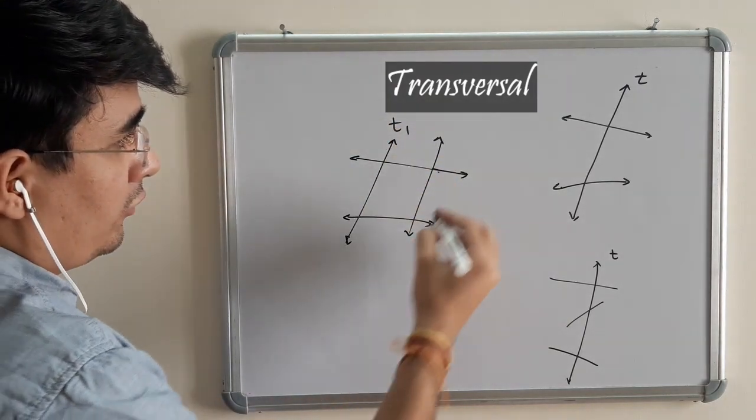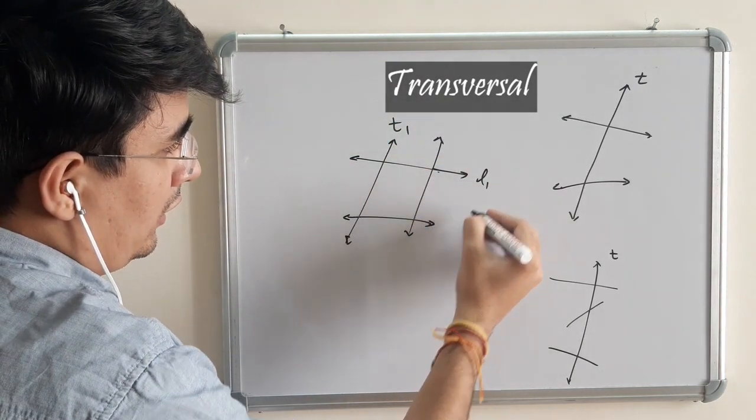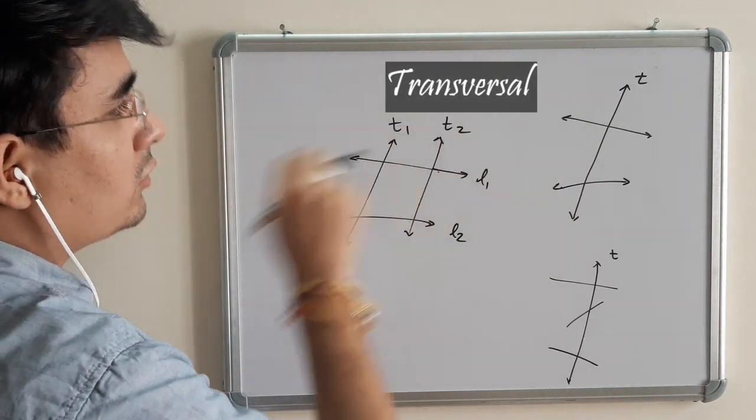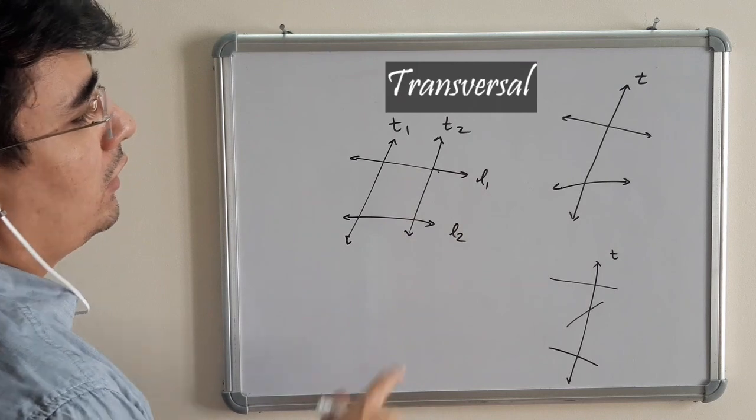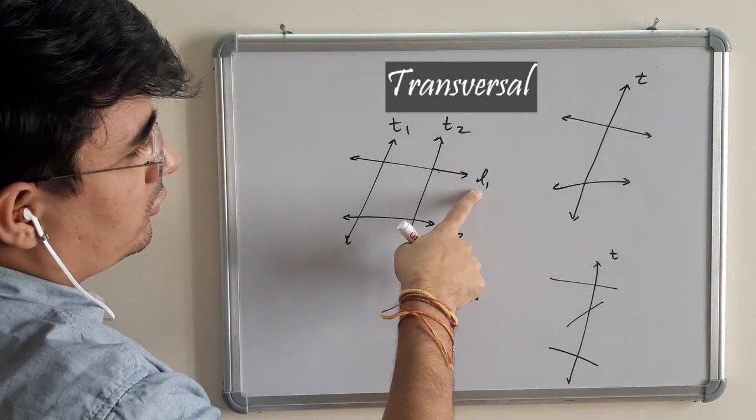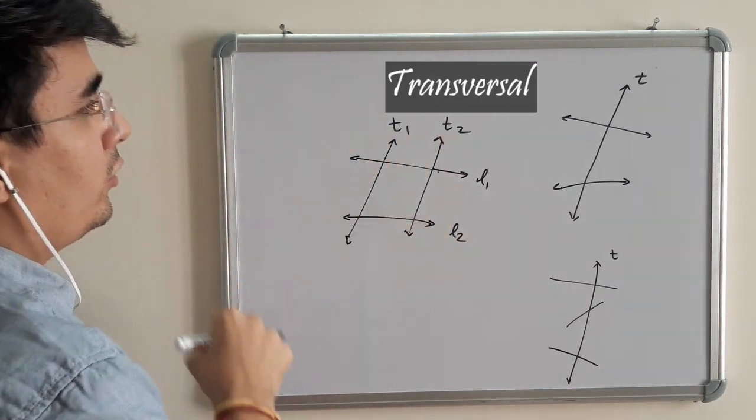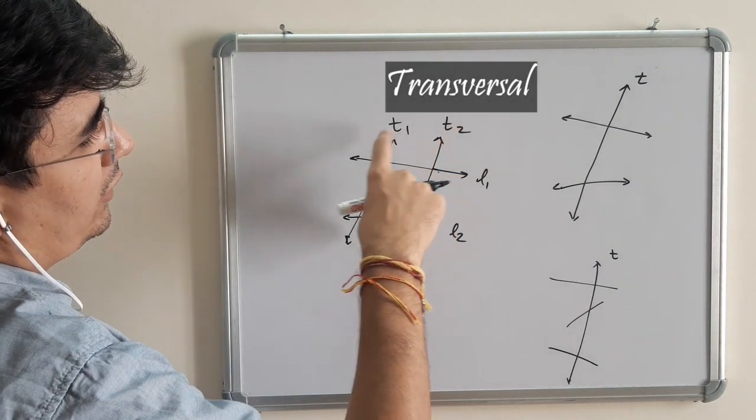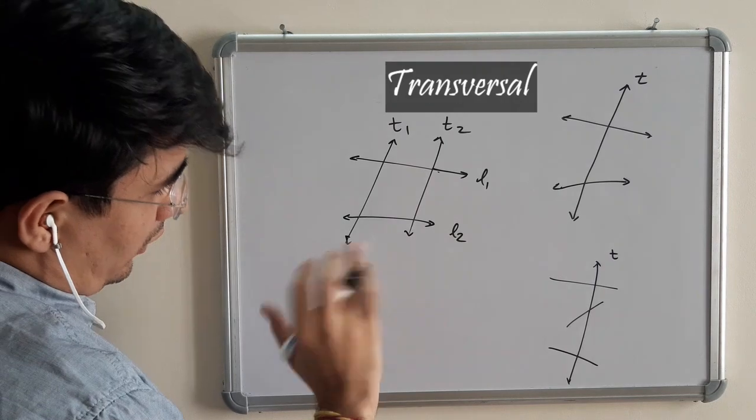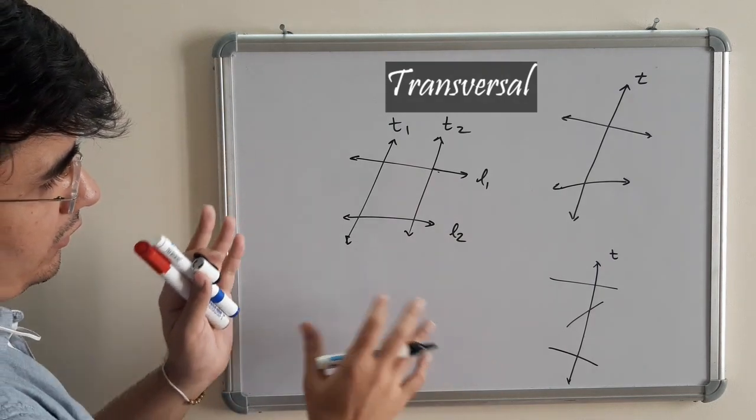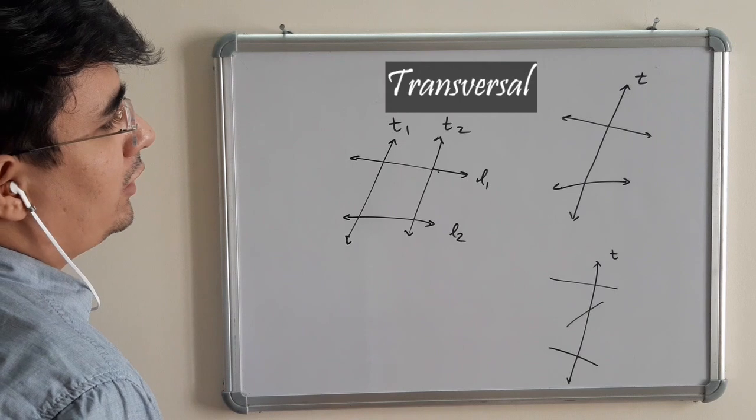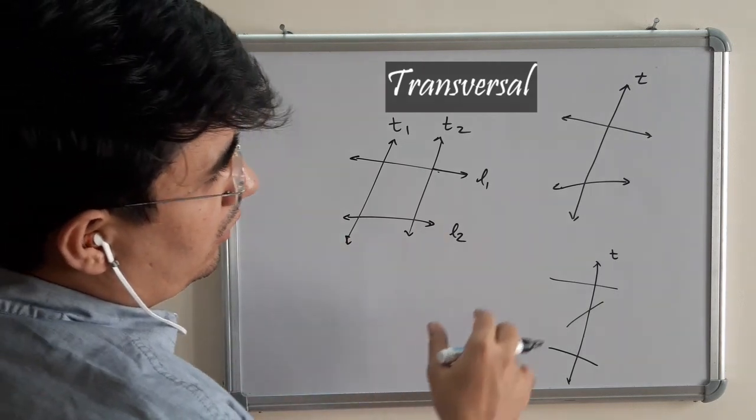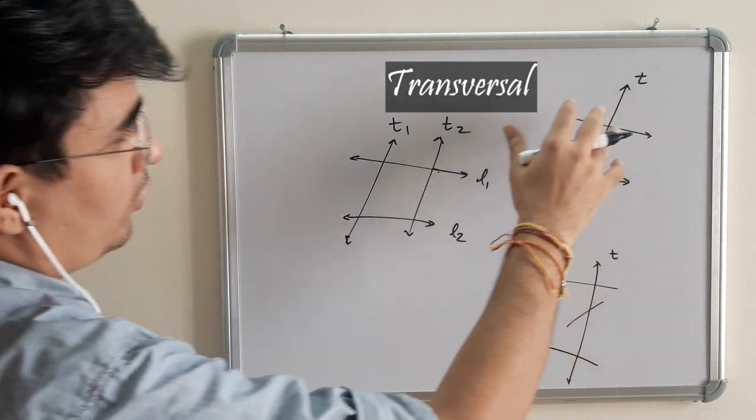So this is T1 for this L1, L2. This is T2. This is also transversal for L1 and L2. L1 is a transversal for T1, T2. And L2 is a transversal for T1 and T2 both. So if you see the perspective, the different way of looking at it, you will get to know there are multiple transversals in a single figure.